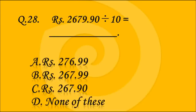Question number 28. Rs. 2679.90 is divided by 10. What do we get? Answer B — Rs. 267.99. When we divide by 10, the decimal point shifts one digit to the left, so the value becomes 267.99. Option B is correct.